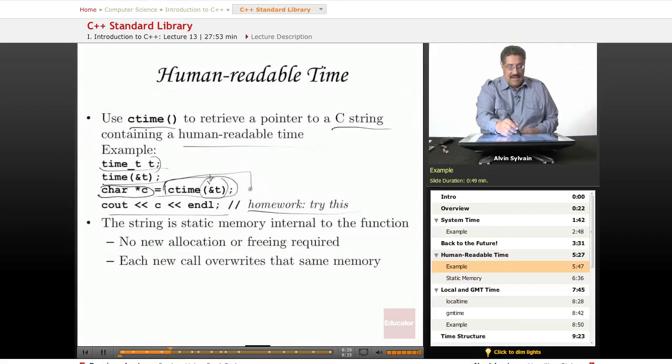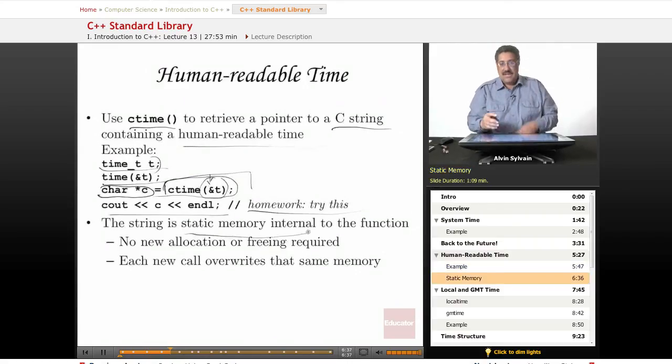The string that's in the ctime function is in static memory. It doesn't allocate new memory or anything. There's two things to worry about. One, you don't have to free the memory that's been allocated. The other one, every time you call it, that same static memory will be overwritten.